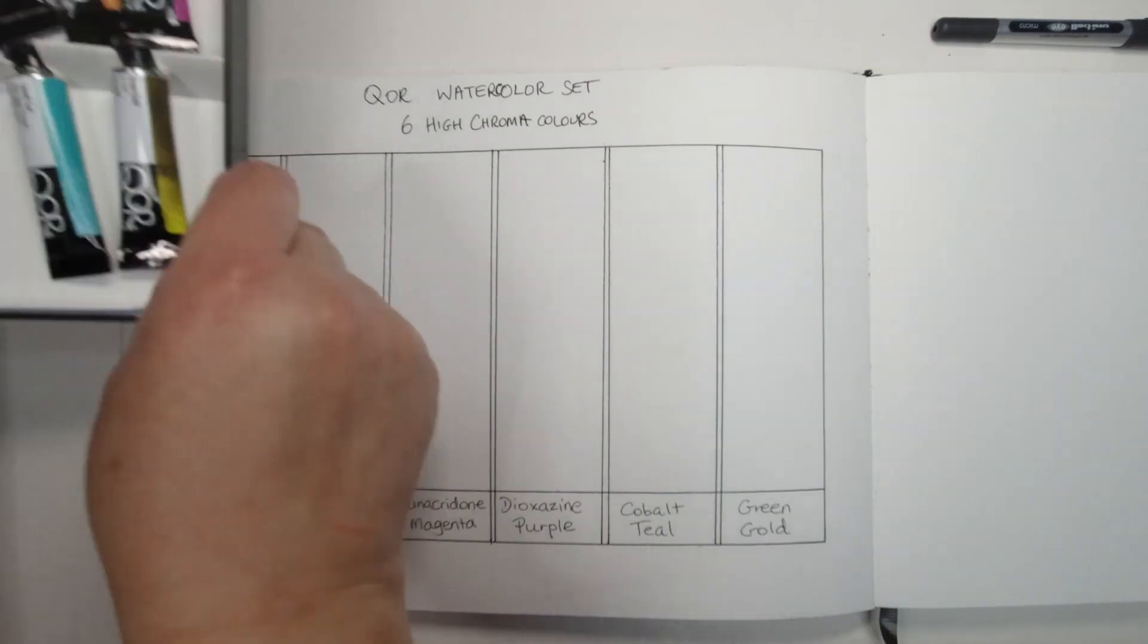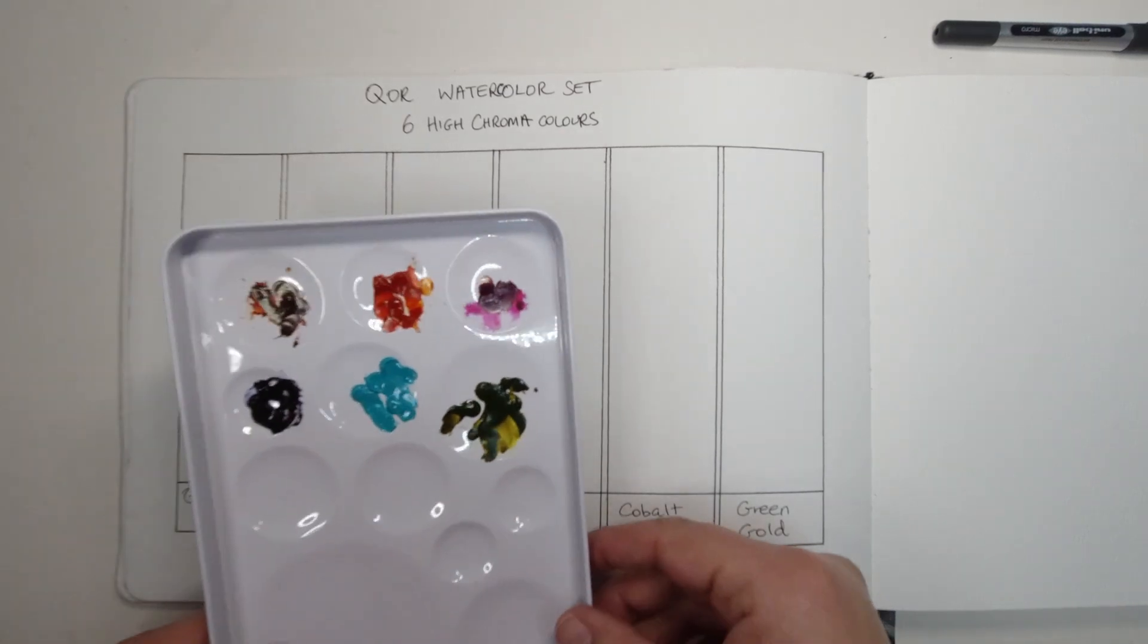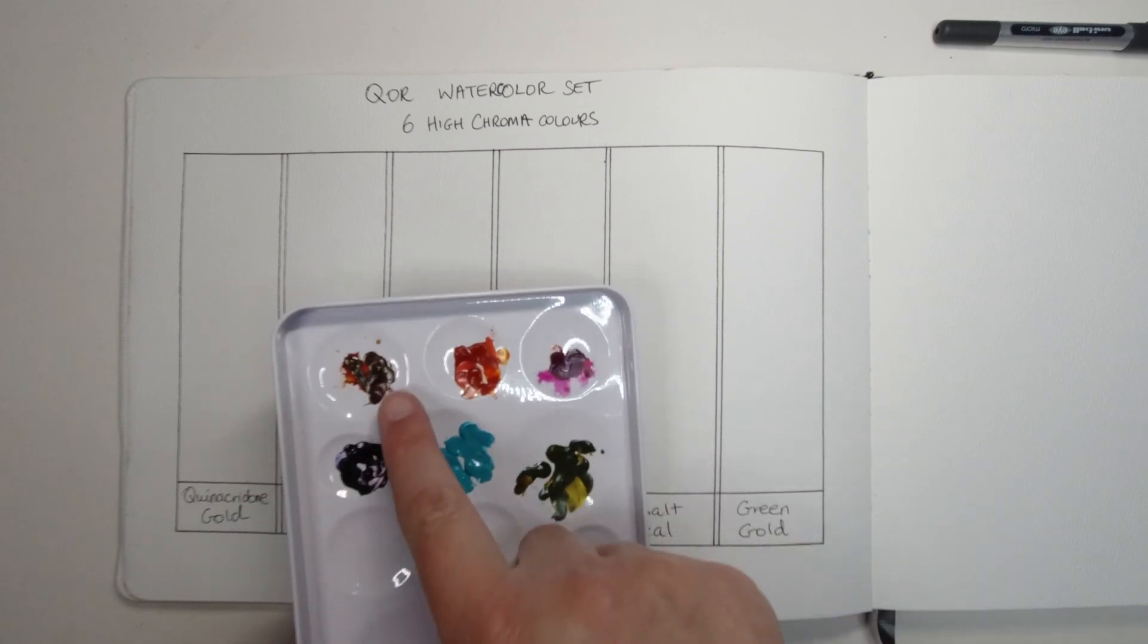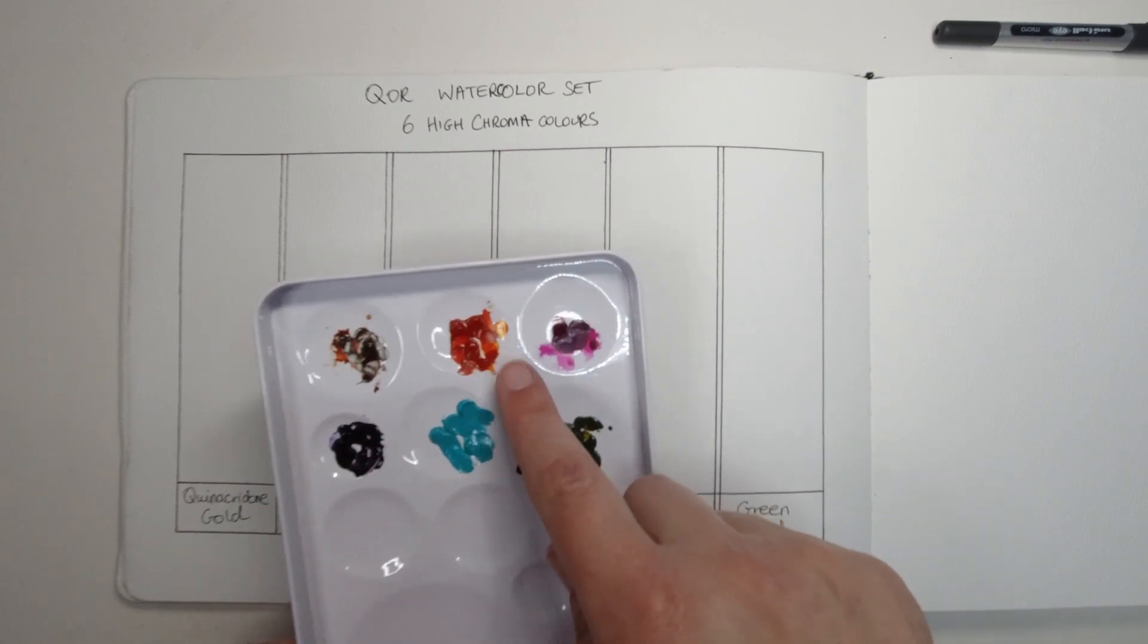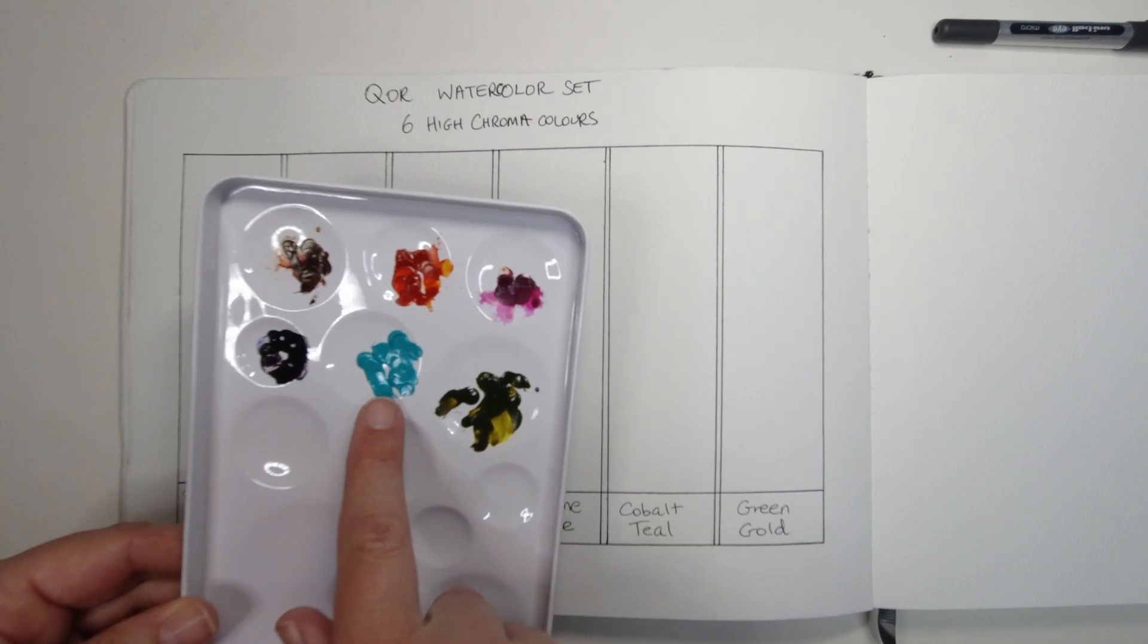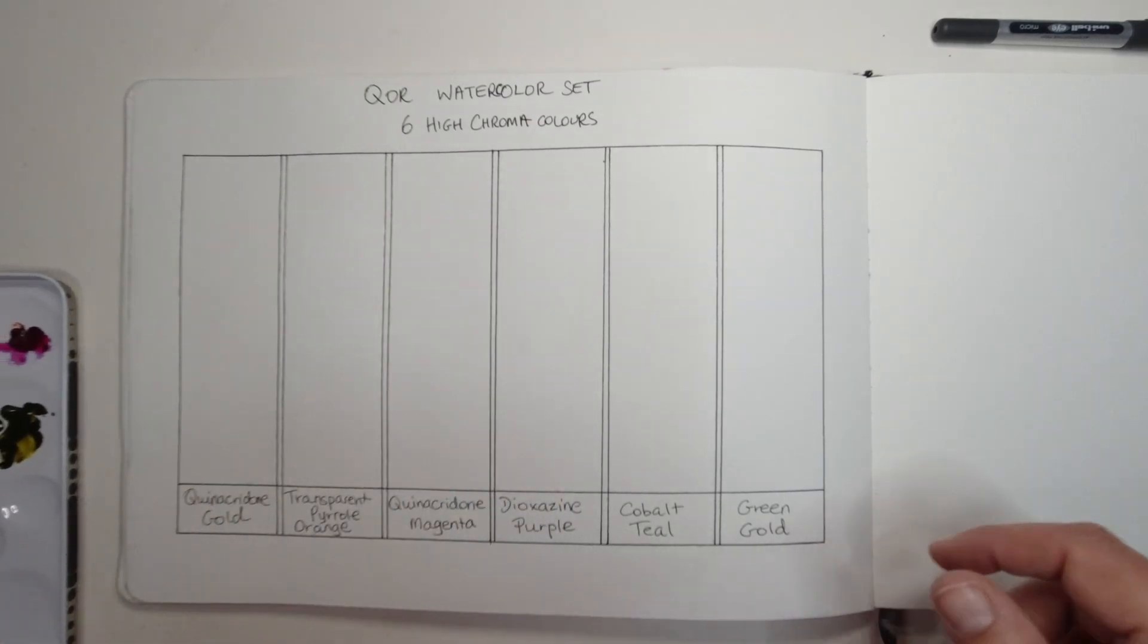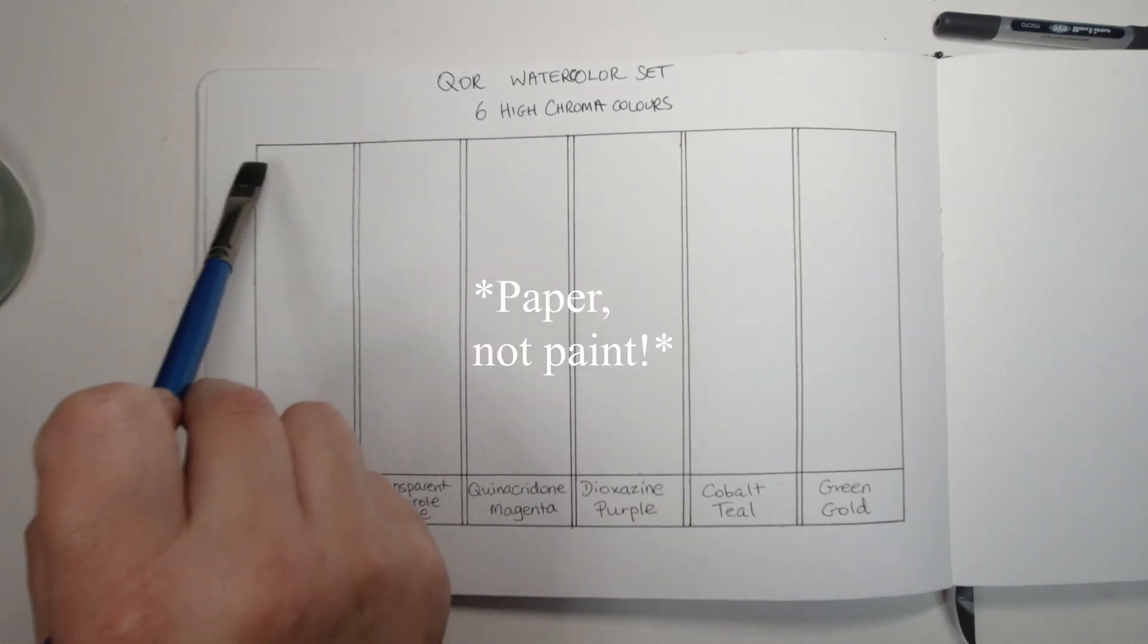I'm going to swatch these paints out for you. I'll just quickly run through the colors here, starting with quinacridone gold, transparent pyrrole orange, quinacridone magenta, dioxazine purple, cobalt teal and green gold. Okay, let's get into it. As usual, I'm wetting the paints because I really want to see the aquazol in action, which of course as I mentioned in the last video is unique to Core watercolors.